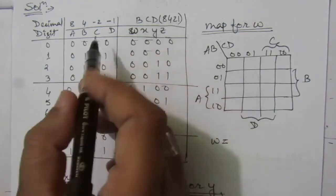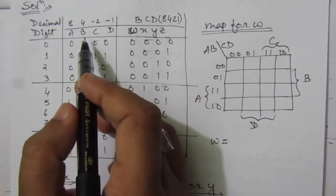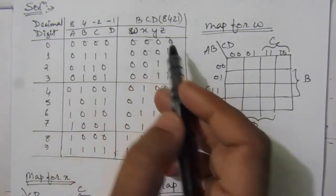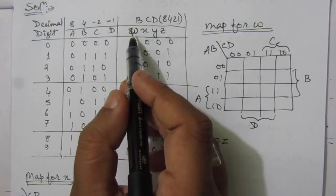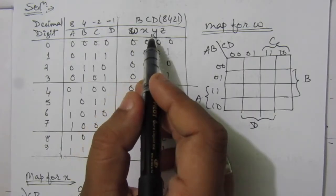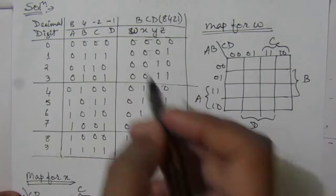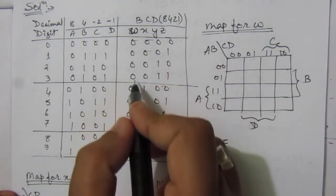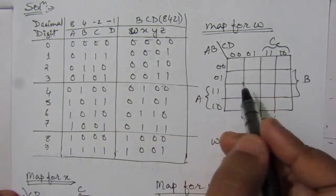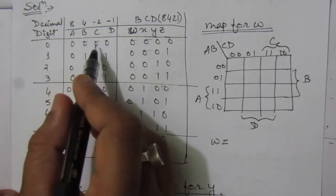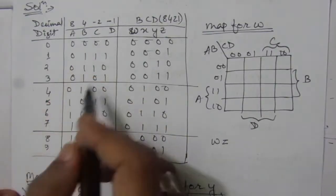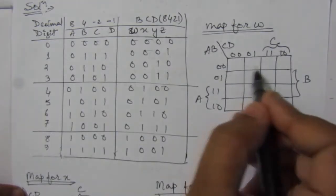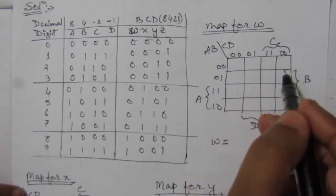We have to find the functions W, X, Y, and Z in terms of A, B, C, D using K-maps. For W, we have 0000, but you cannot directly put the zero values here because you have to see the respective digits — A, B, C, D are the 8,4,-2,-1 code bits. Each box in the K-map represents a minterm.